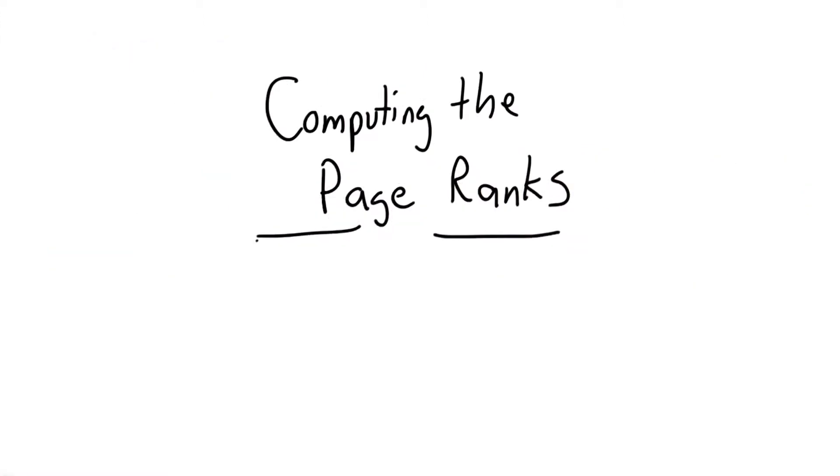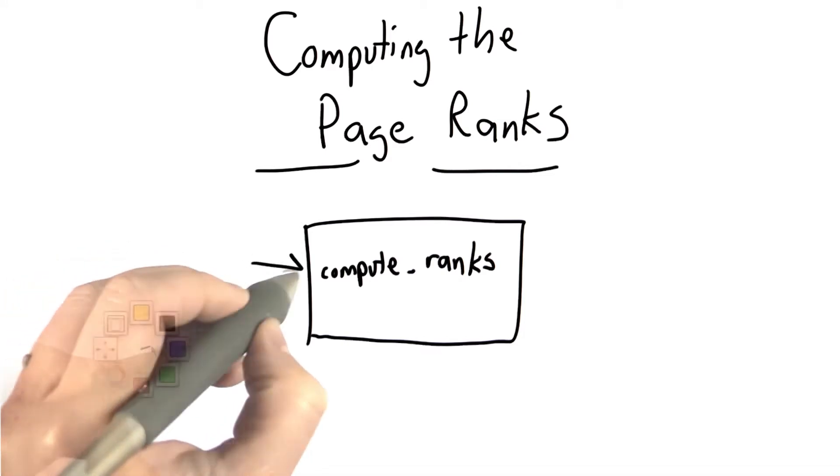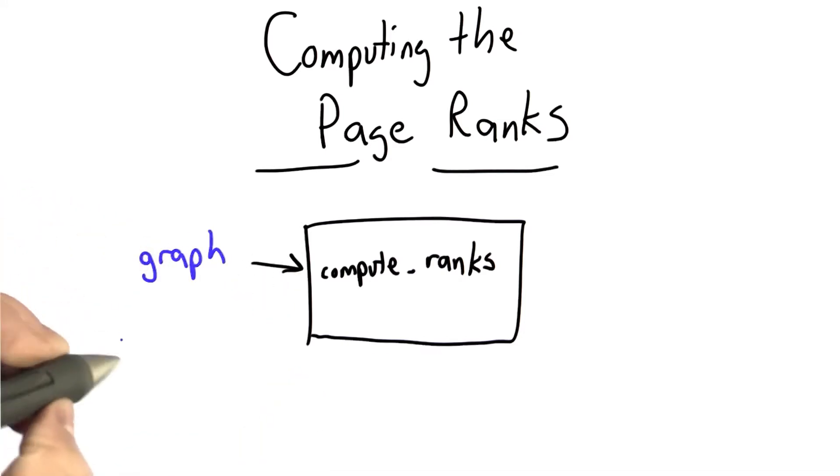Now that we've got the graph, all that's left to do is figure out how to use it to compute the page ranks. To do that, we'll make a procedure called compute_ranks. It takes as input a graph that gives the link structure.